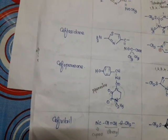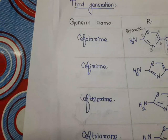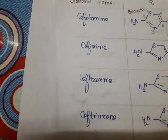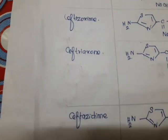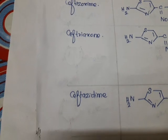These are all the third-generation cephalosporins: cefotaxime, cefixime, ceftizoxime, ceftriaxone, ceftazidime, cefoperazone, and cefpirome.